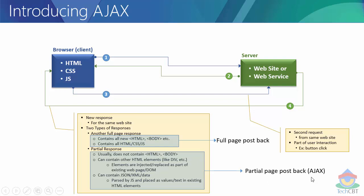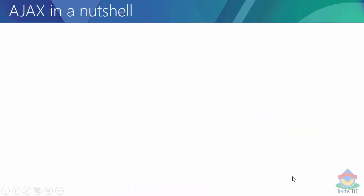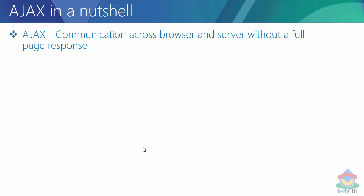Ajax stands for Asynchronous JavaScript and XML. It works with JavaScript and in return it might have XML, JavaScript, JSON, or data — and everything happens asynchronously. Let us recap everything we learned about Ajax. Ajax is nothing but a special type of communication which happens between the browser and the server without having a full page response. It is still a network activity — a network activity which happens between the browser and the server.